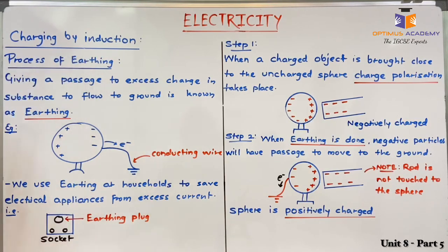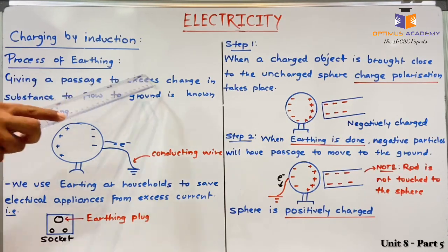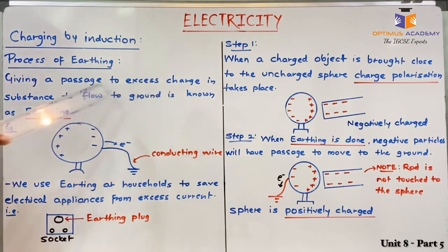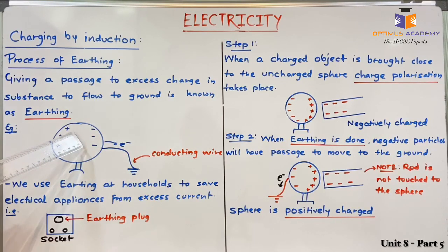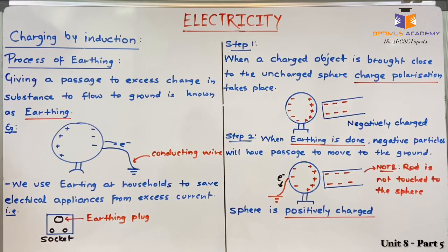Why do we need earthing for electrical appliances? Earthing means giving passage to excess charge in a substance to flow to the ground. Suppose I have an object carrying positive and negative charges — when I connect this object to the ground using a conducting wire, charges can flow through this wire to the ground whenever needed. This is known as earthing.